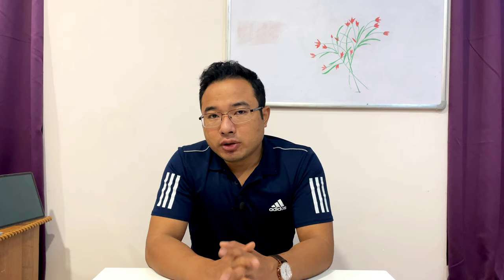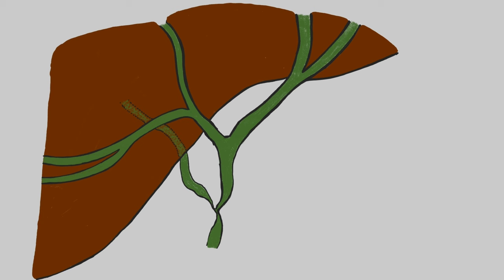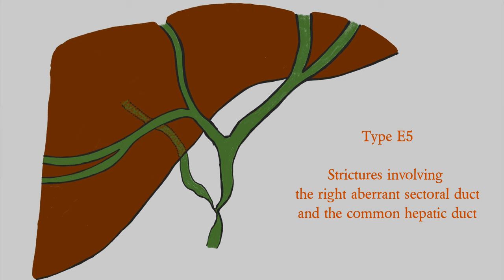E5 is a bit different, so try to remember it separately. It involves strictures of the right aberrant sectoral duct along with the common hepatic duct.